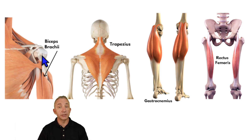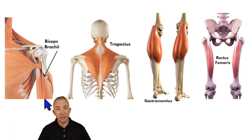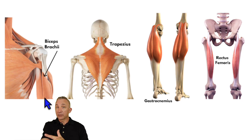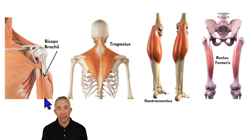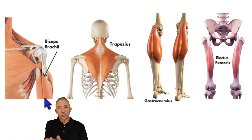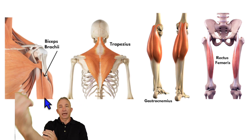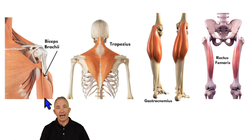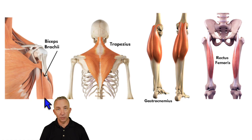The biceps has two origins because it has two heads, but they come down together and attach on the distal side to the radial tuberosity of the radius. So the insertion is the radial tuberosity. This gives it the actions of supination and flexion of the elbow, based on its attachment point at the radial tuberosity.